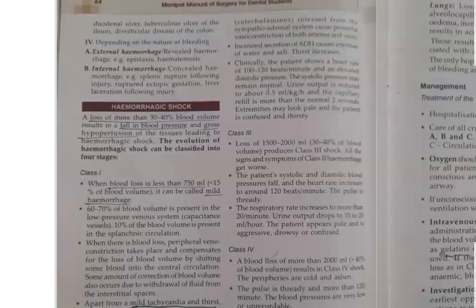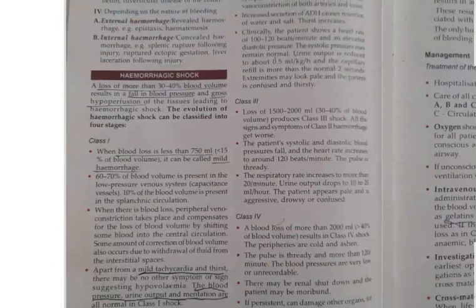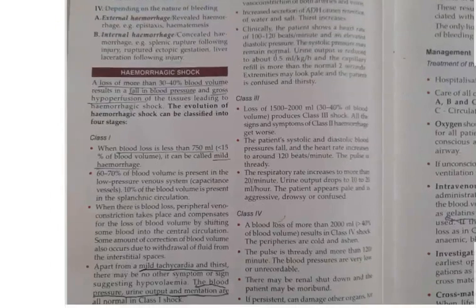Hemorrhagic shock is a complication of hemorrhage — that is, a complication of excessive bleeding. Hemorrhagic shock can be classified into various categories: Class 1, Class 2, Class 3, and Class 4.